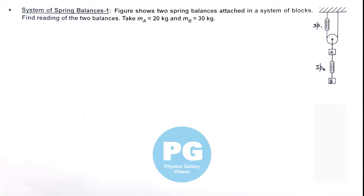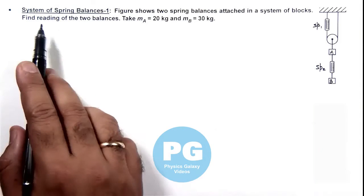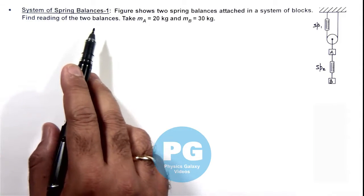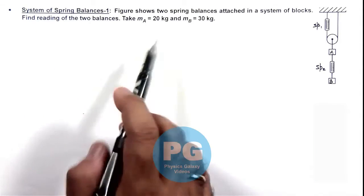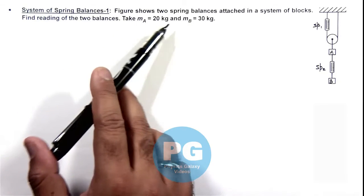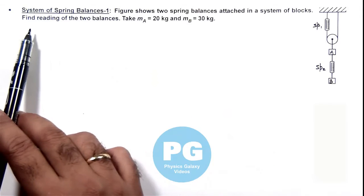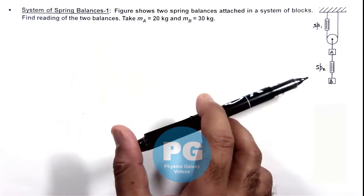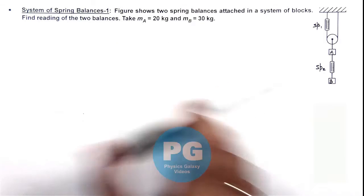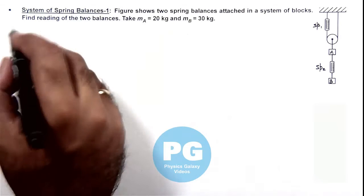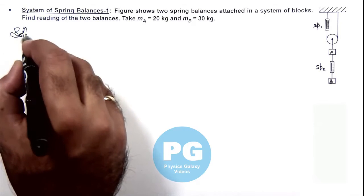This illustration is explaining the system of spring balances. Here a case is shown, and the figure shows two spring balances attached in a system of blocks. We are required to find reading of the two balances, and the masses of blocks A and B are also given here for solving the situation.